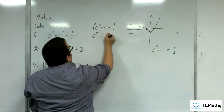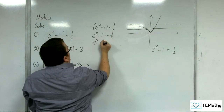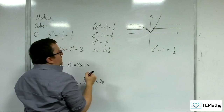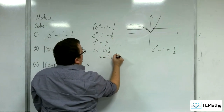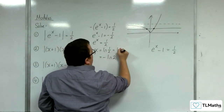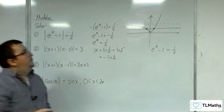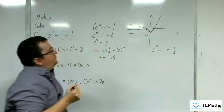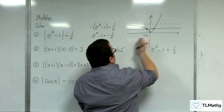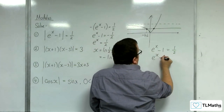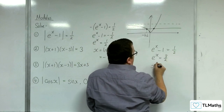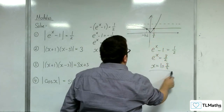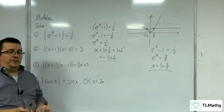So e to the x take away 1 equals minus 1 half. Adding 1 to both sides, we get e to the x is 1 half. So x is going to be log of 1 half, which is the same as minus log 2, because log of 1 half is log of 2 to the minus 1 — bring the minus 1 down to the front. So that's minus log 2. For the positive equation, e to the x equals 3 halves, and so x is the natural log of 3 halves. Those are the two solutions to that equation.